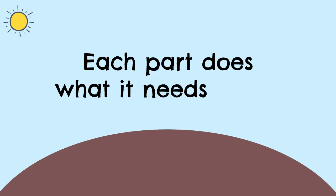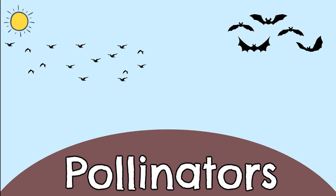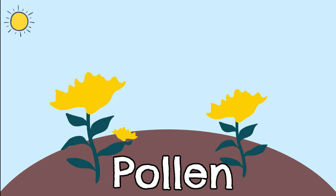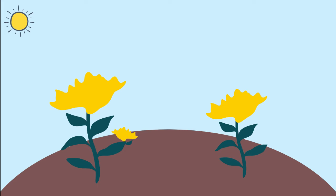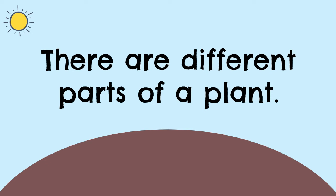Pollinators like birds and bats and butterflies, bees and even ants carry pollen from flower to flower from the same plant or other plants. There are different parts of a plant.